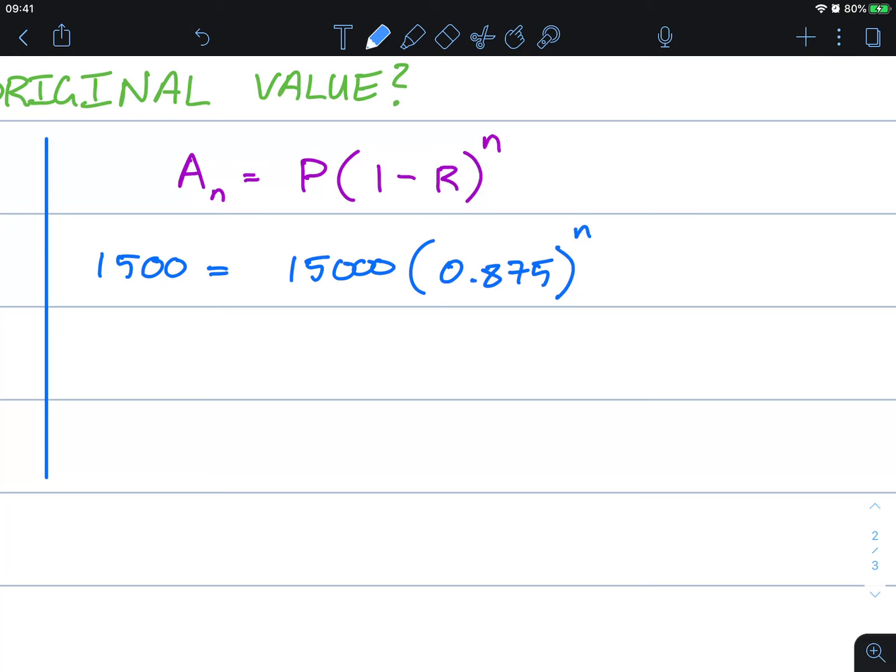Solving for n. Dividing both sides by 15,000. Well, 1,000 over 15,000, that's 10%, so 0.1 is equal to 0.875 to the power of n.